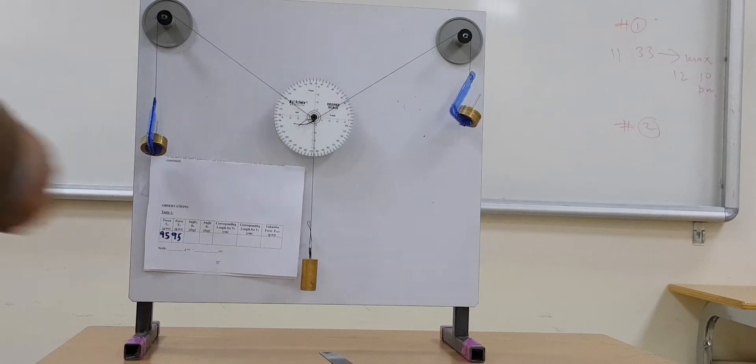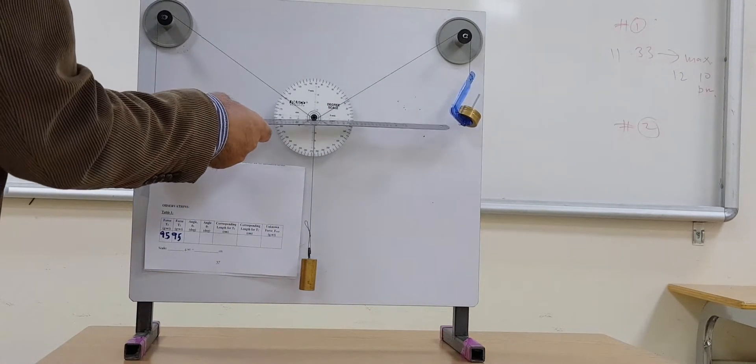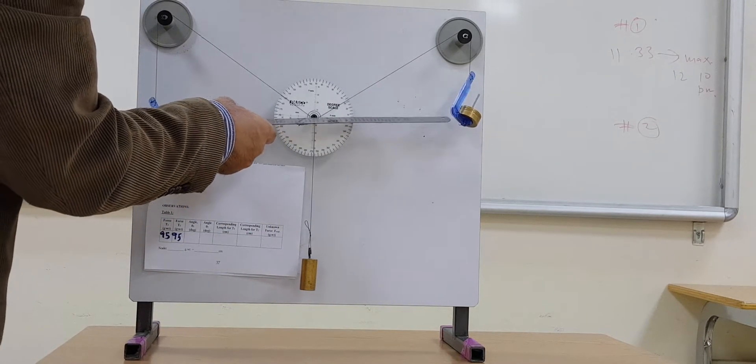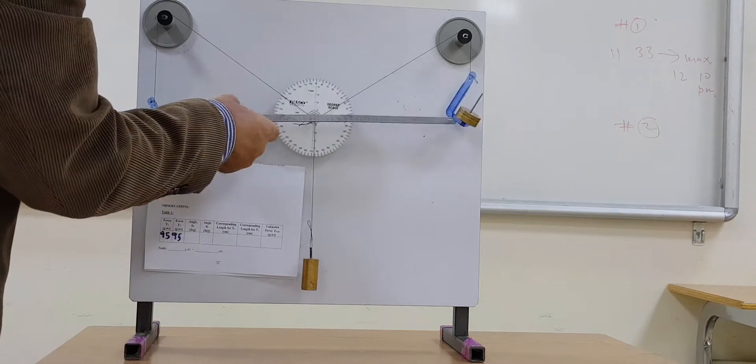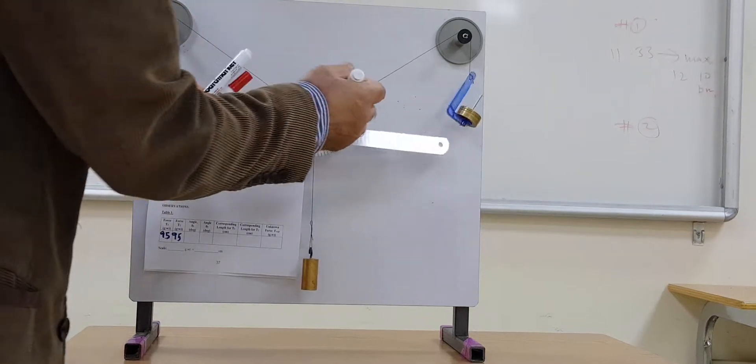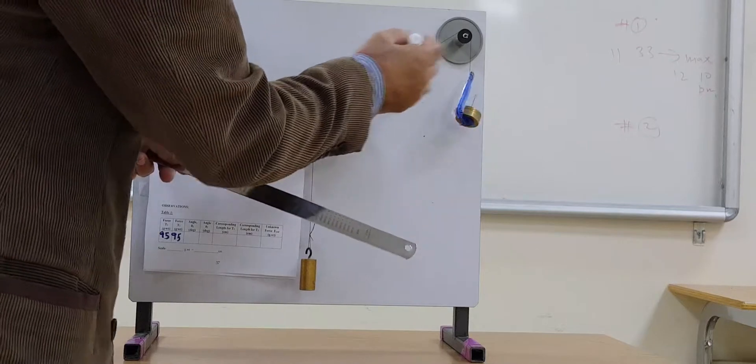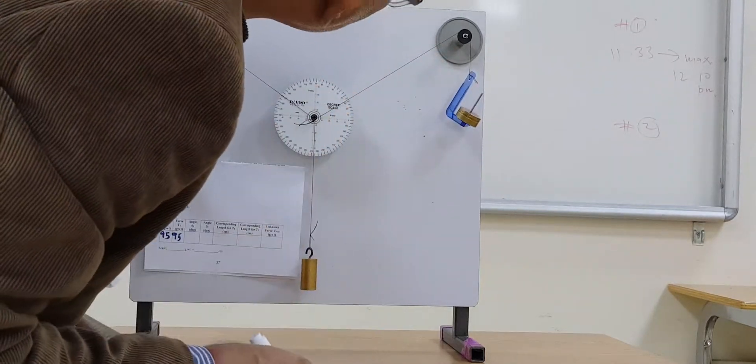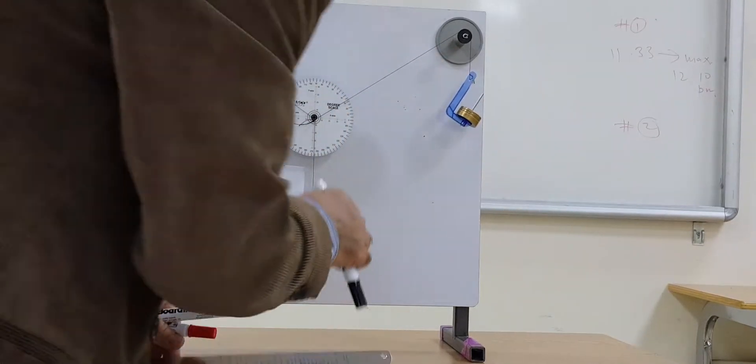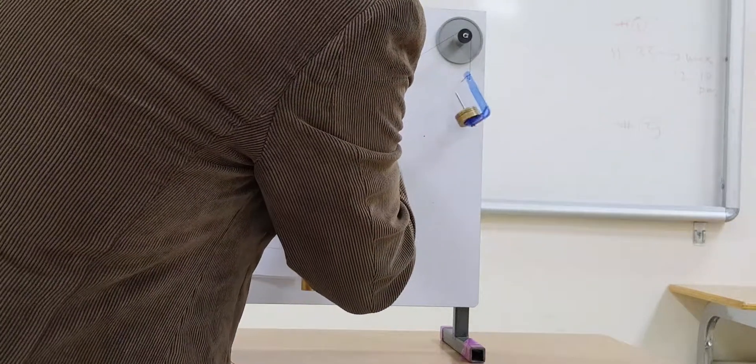Then you have theta 1 and theta 2. From the x-axis up to here, from the x-axis up to here, this is T1.